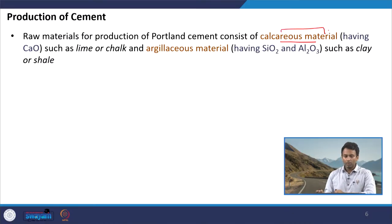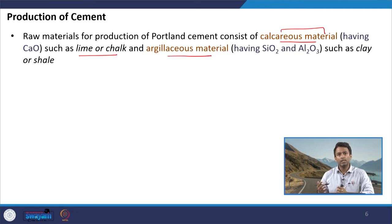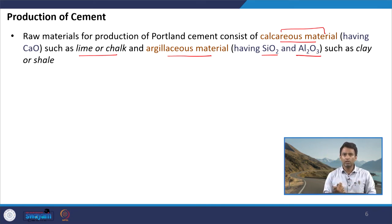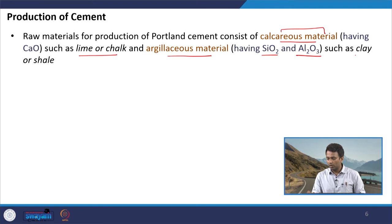The basic principle of manufacturing cement remains the same. We need a calcareous material — commonly lime or chalk — which provides calcium oxide, and an argillaceous material comprising silica and alumina. The common source for argillaceous material is clay or shale. To modify properties of cement, other raw materials such as silica sand, iron oxide, or bauxite can also be used.